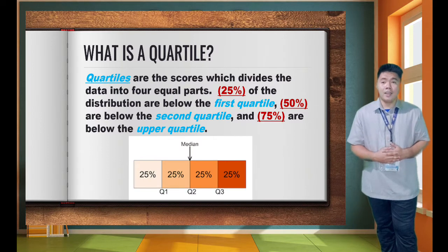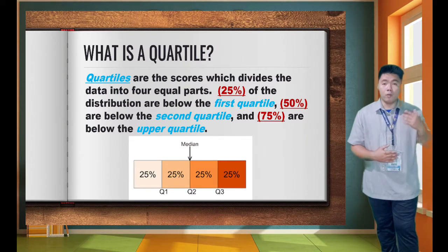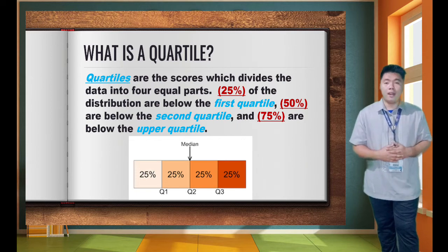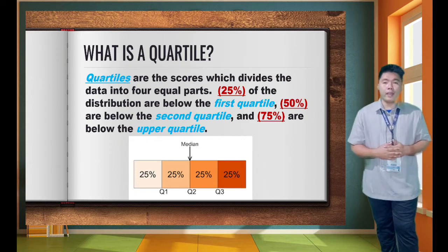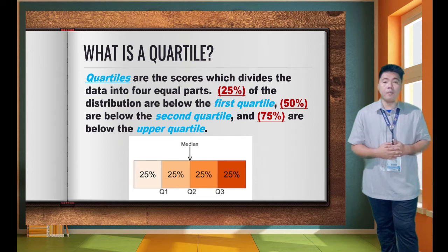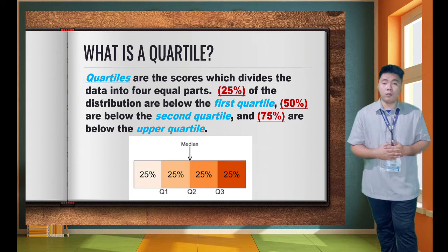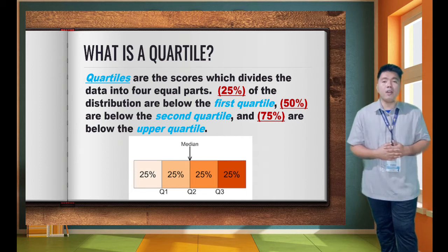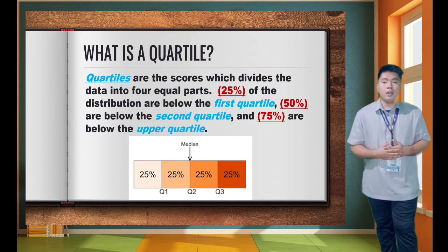Let's start by defining what a quartile is. Quartiles are the scores which divide the data into four equal parts. 25% of the distribution are below the first quartile, 50% are below the second quartile, and 75% are below the upper quartile. Remember that quartiles divide data into four equal parts.